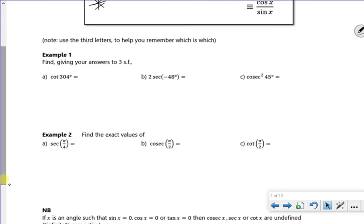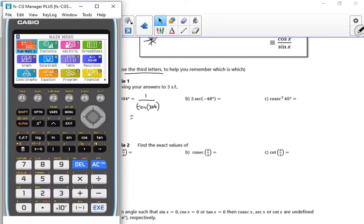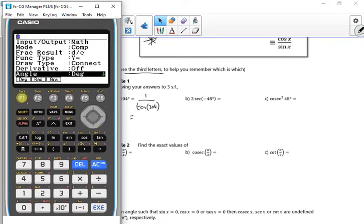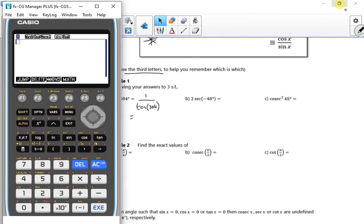So it says use the third letter to help you remember which is which. Example 1: Find, giving your answers to 3 significant figures: a) cot 304°, b) 2 sec(-48°), c) cosec² 45°. Let me bring the calculator up. It needs to be in degree mode.